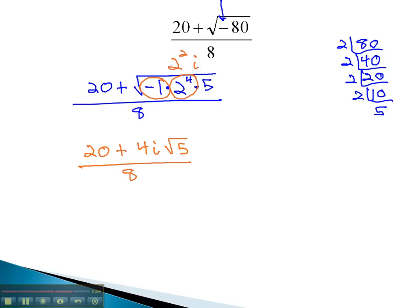Before we're allowed to reduce, we must factor the numerator. 20 and 4 are both divisible by 4, giving us 4 times 5 plus i square root of 5, over 8. And now, we can reduce the factors. 4 and 8 are both divisible by 4, leaving 2 in the denominator. For our final answer, we have 5 plus i square root of 5, over 2.